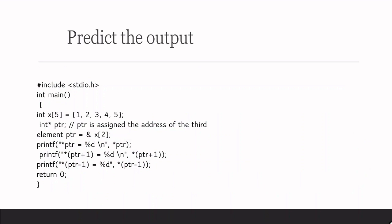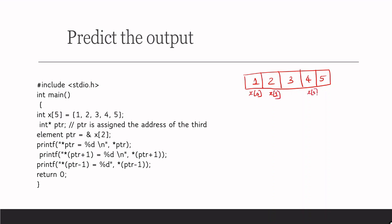Next let us predict the output. We have x[5] with 5 elements: 1, 2, 3, 4, 5. These correspond to x[0], x[1], x[2], x[3], and x[4].